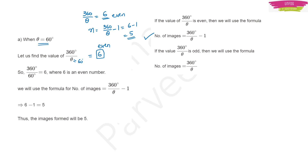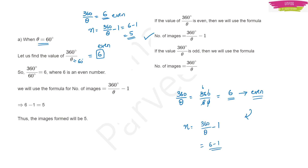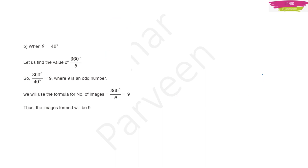I hope you understand. I substituted θ = 60, got 360/60 = 6, which is even, so I used 360/θ − 1 = 5. Simply: if you get an even number, subtract 1; if you get an odd number, keep it as it is. Number of images here is 5. Another example: if θ = 40°.